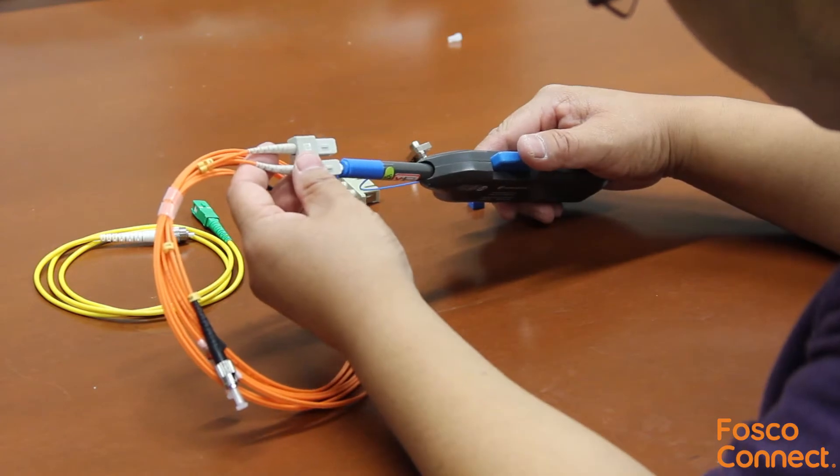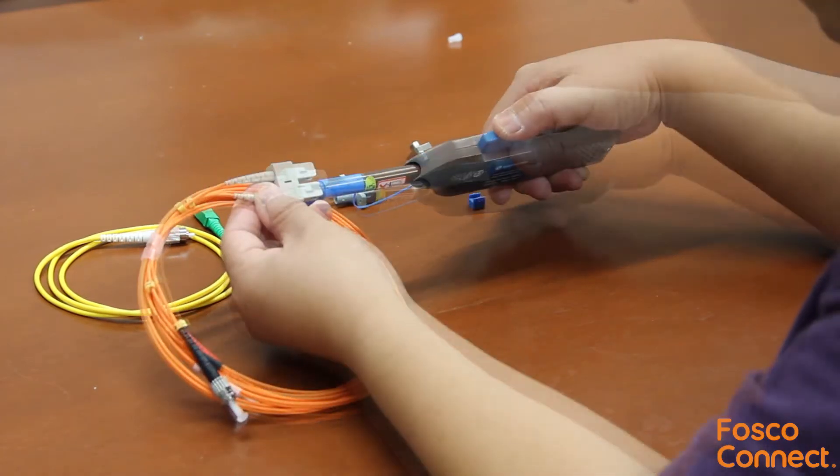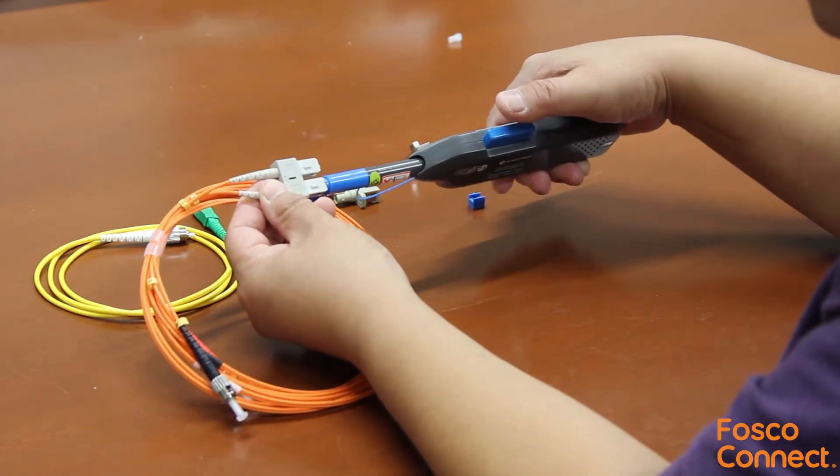Just insert the connector ferrule into the center hole, press down, and hold the pressure. Click once, and it is cleaned.